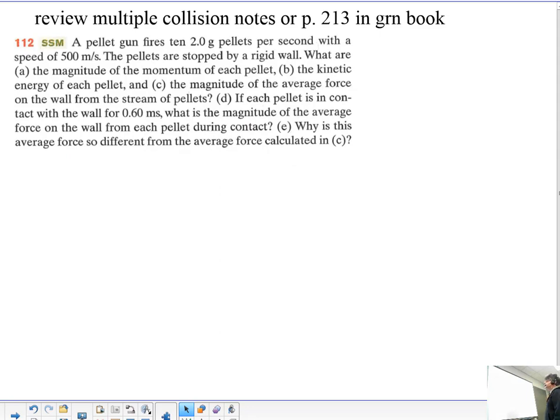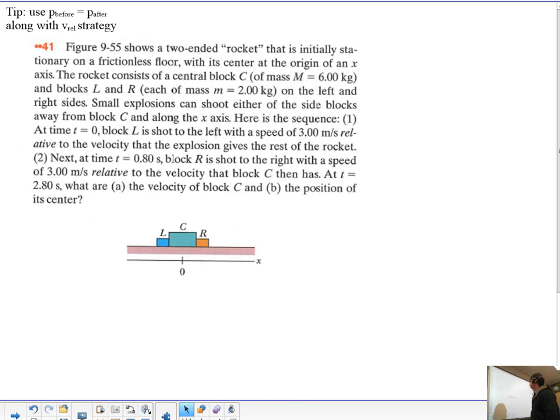This is the multiple collision one, so you want to go back to the beginning of the lesson, or I think I gave you the book page 213, and it takes you through it. You just have to read each piece carefully. Watch the units here, 0.6 milliseconds, which is a really tiny amount of time, and 2 grams instead of kilograms. So if you go back to that, you should be pretty good with that one.